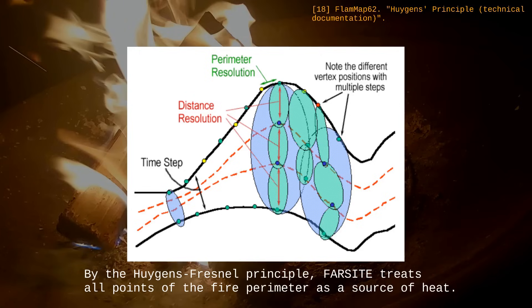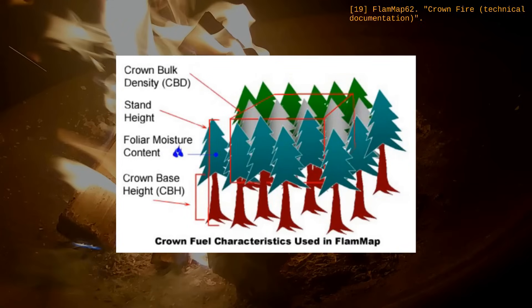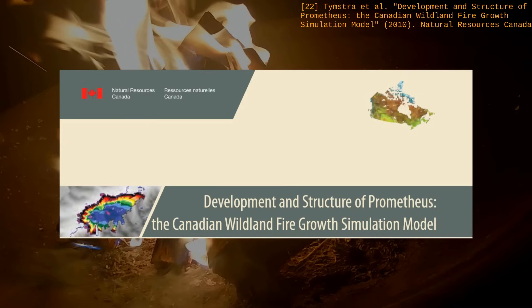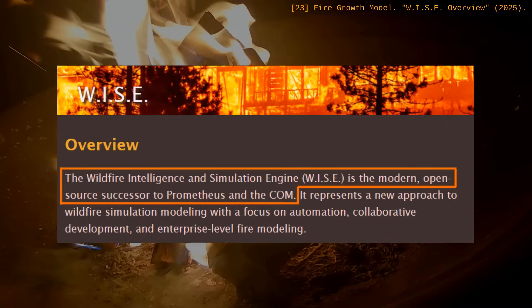It uses Rothermel's model to compute spread rate, but that's just one element. The Huygens-Fresnel principle simulates 2D propagation by treating every point of the fire perimeter as a source of heat. Additional equations simulate crown fires and other phenomena. There are a lot of equations at play, but that is still an approximation of reality that does not hold in some contexts, like when simulating interactions between fires. Other programs, like Prometheus developed in Canada, use similar approximations but rely on different models. And researchers are still improving these computer programs to make them more accurate and easier to maintain.